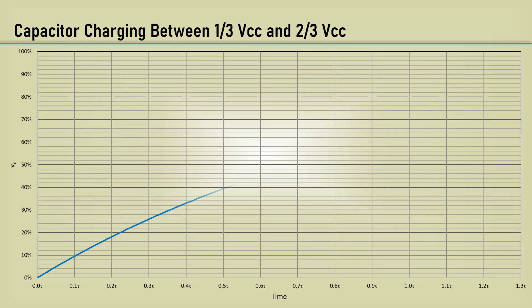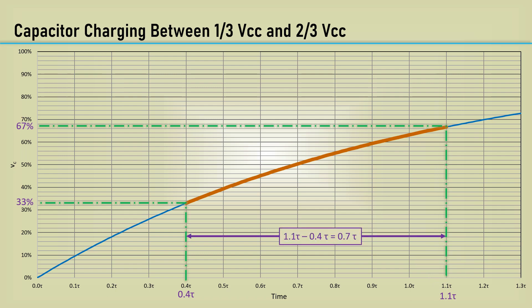Here's our capacitor charging chart again, zoomed in to a range from 0 to 1.3 tau. At 1/3 VCC, the time is 0.4 tau. At 2/3 VCC, the time is 1.1 tau. The difference between those times is 0.7 tau. Hey, that's remarkably close to the 0.693 number in the equation. Let's go figure out what it is exactly.